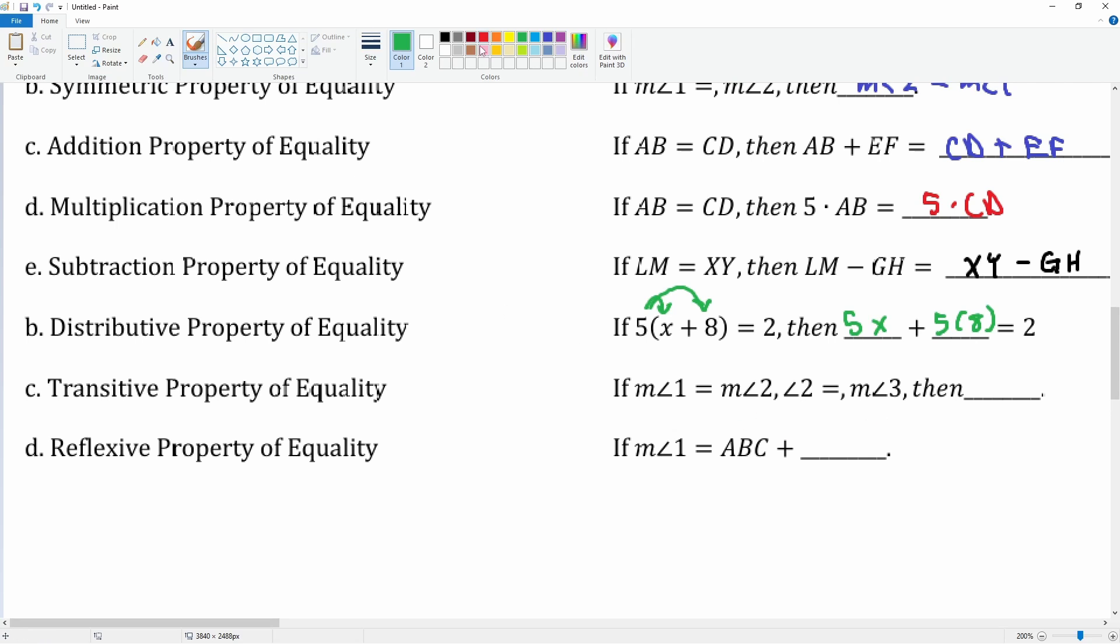Transitive property: 1 is 2, 2 is 3, then you can just ignore the middle part. Angle measurement of 1 is equal to the measurement of angle 3. Make sure you include the squiggly line there. No wait, sorry, the angle measurement has no squiggly line.